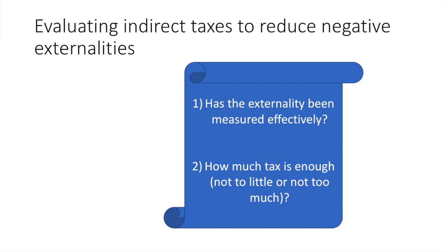Second, how much tax is enough? A government can under or overtax an industry, which results in either too little being done to address an externality, or too much. If an excessive burden is put on businesses, this can lead to unemployment and unnecessarily high business costs.